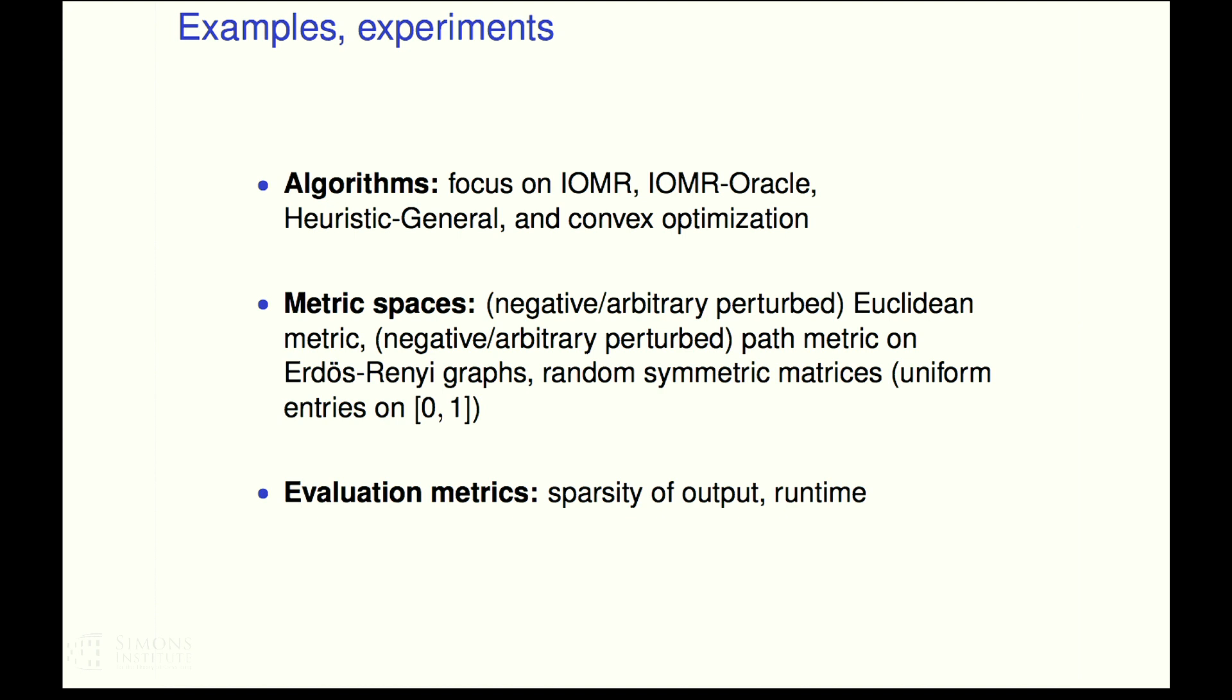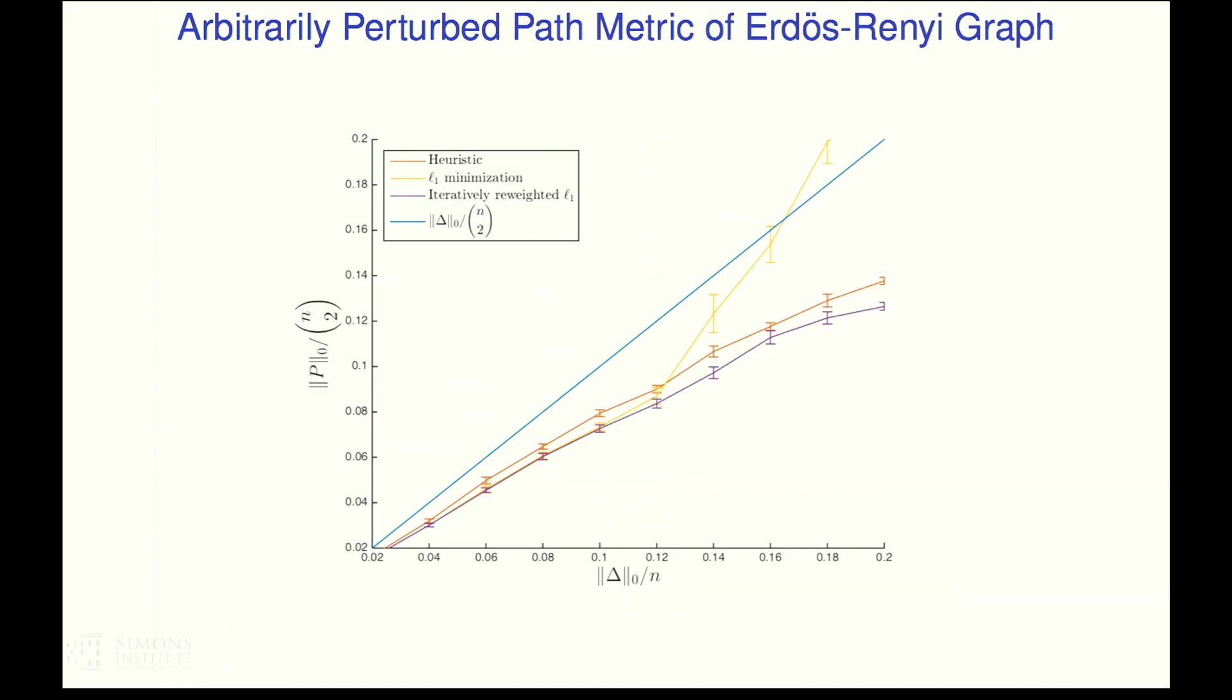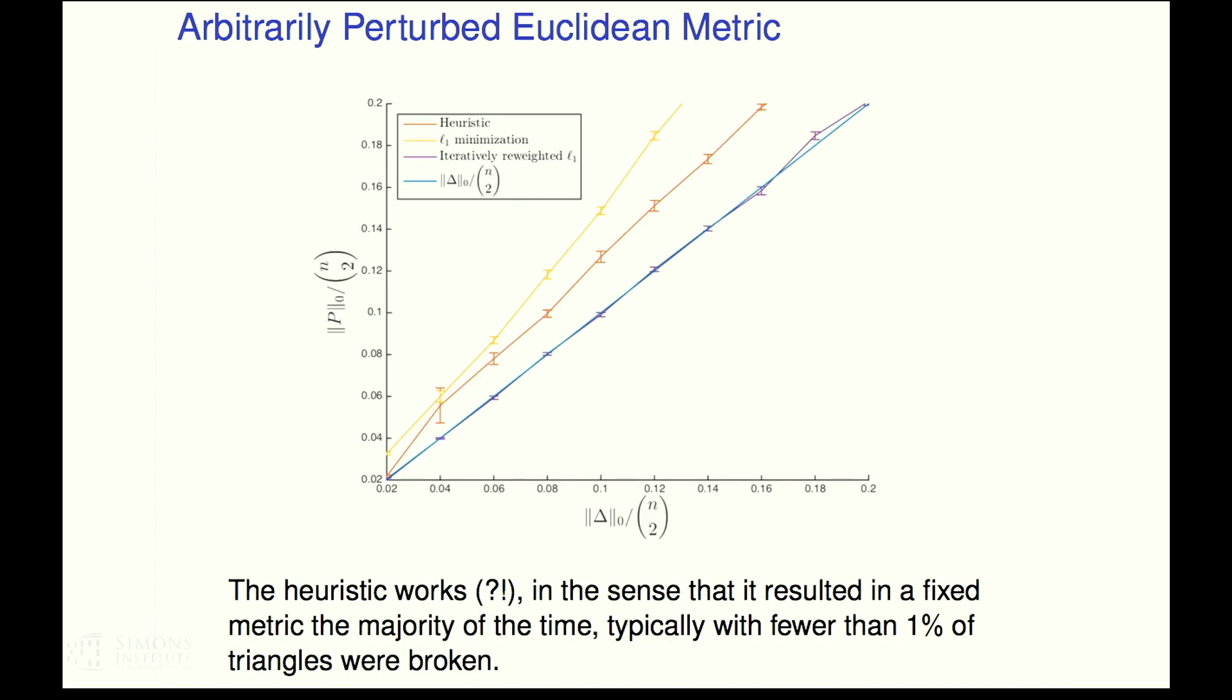And then to evaluate our algorithms, we could have done a zillion things. We just focused on the sparsity of the output and then the runtime. So that's all I'm going to show you and I will be quick with my experiments. Let me skip. This slide is about the general algorithm for the heuristic algorithm for the general problem. It works mostly. What's interesting is that it left a very small fraction of triangles broken. So fewer than 1% broken in the end. And iteratively re-weighted L1 does beautifully. L1 minimization less well than the heuristic sits somewhere in between.